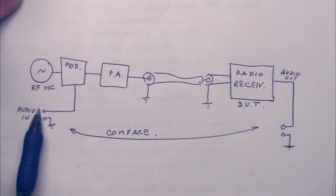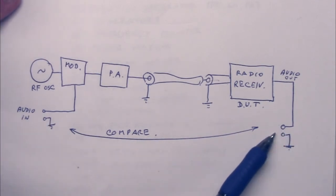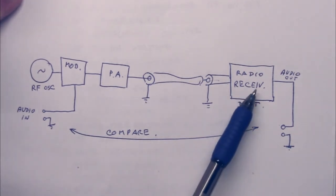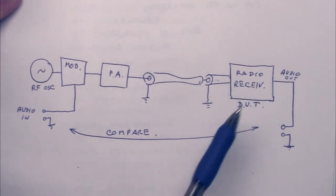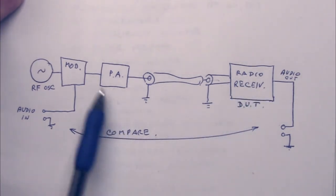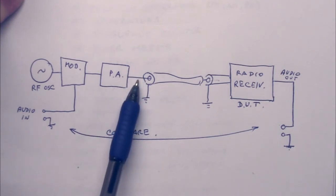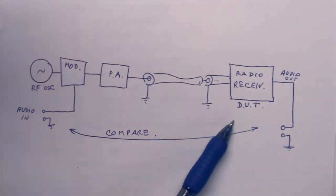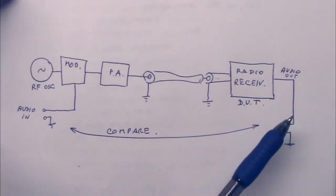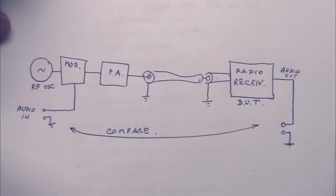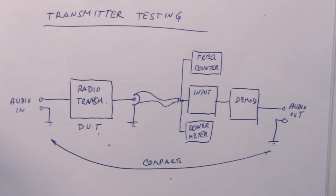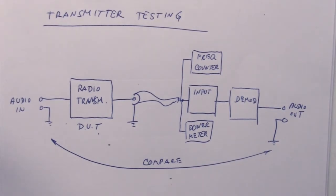And again, you can compare what audio you send in to what you get out. And using this method, you can test stuff like frequency drift in the radio receiver, the quality of the demodulator, and sensitivity. You can turn down the power lower and lower until you get the signal-to-noise ratio on the output that is required. So using these two setups, the receive setup and the transmit setup, you can basically test everything that is worth testing in a radio link.